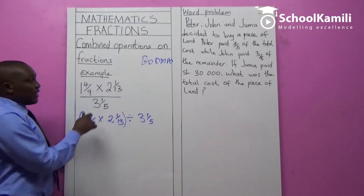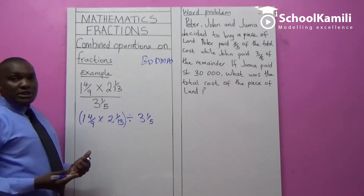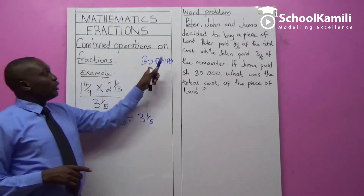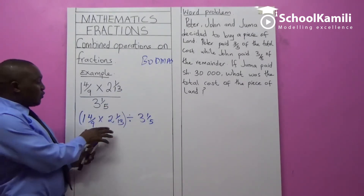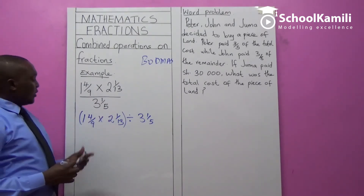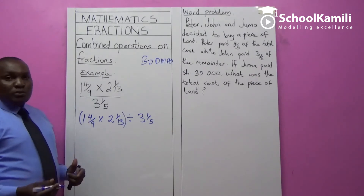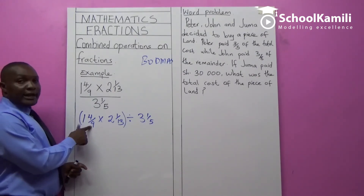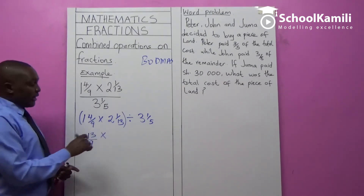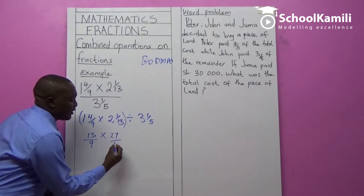...3 and 1 fifth. Put brackets to show you want to solve what is in the numerator first, then embark on the denominator. Going back to the rule BODMAS, begin with brackets. In between the two mixed fractions we have a multiplication sign. Convert mixed fractions to improper fractions: 1 and 4/9 becomes 13 over 9. Multiply by 2 and 1/13: that is 2 × 13 = 26 plus 1, giving 27 over 13.